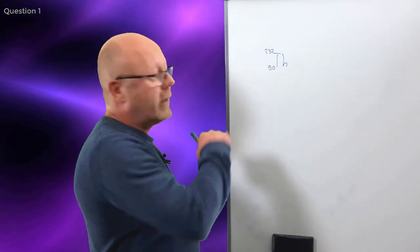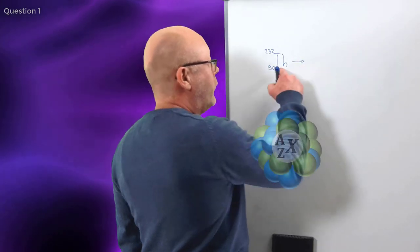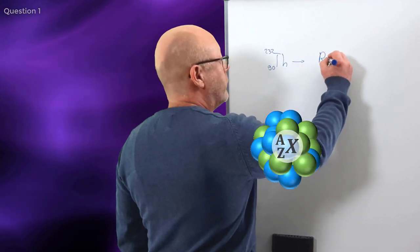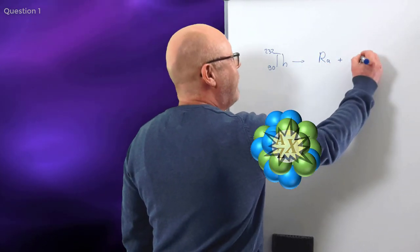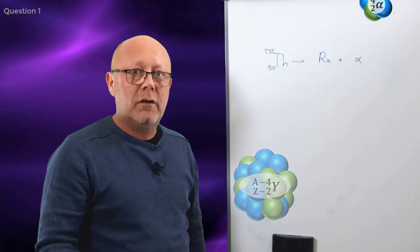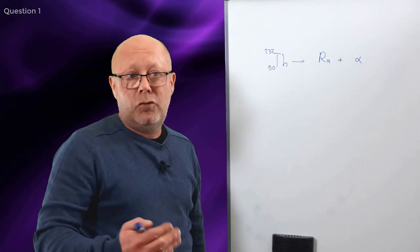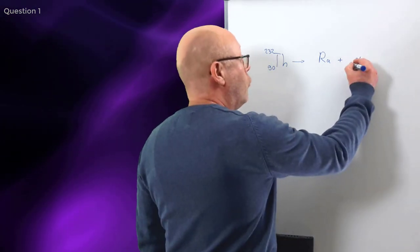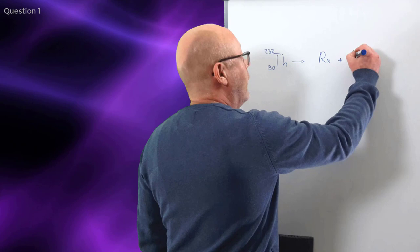Now, there's an alpha decay that occurs, and it transforms the thorium into radium plus an alpha. What is an alpha? An alpha is a helium nucleus. A helium nucleus contains two protons and two neutrons. Therefore, two protons and four nucleons.